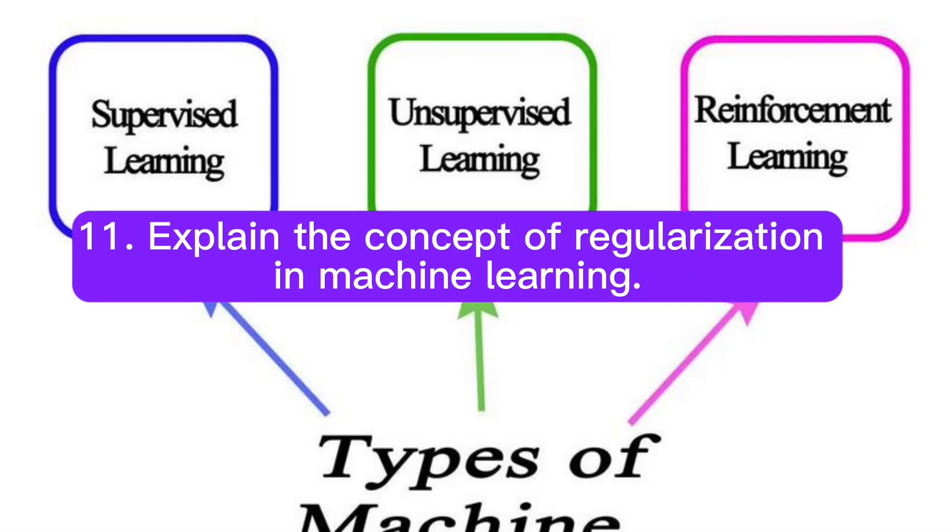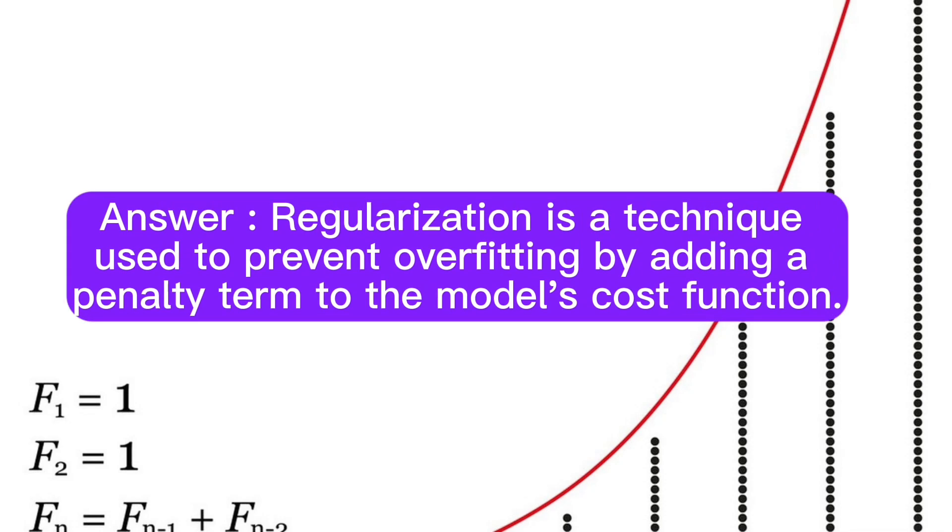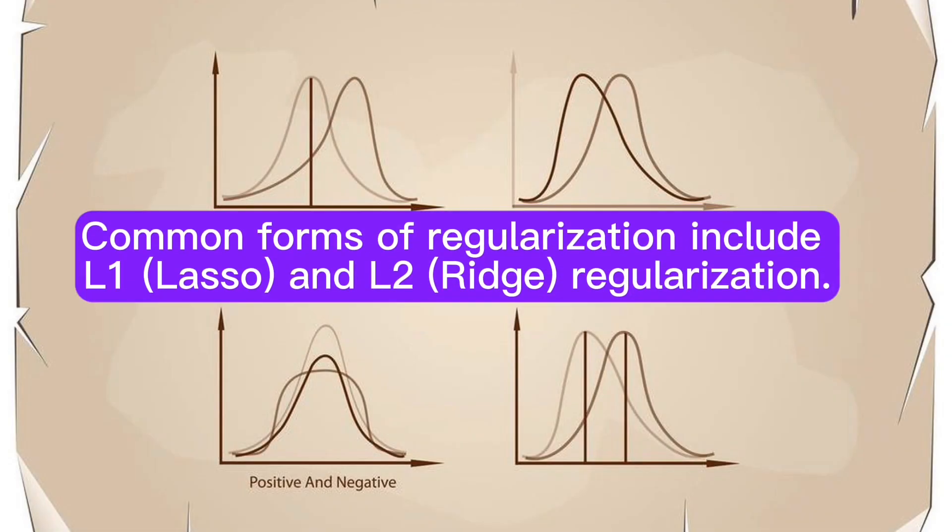Question 11: Explain the concept of regularization in machine learning. Answer: Regularization is a technique used to prevent overfitting by adding a penalty term to the model's cost function. Common forms of regularization include L1 (lasso) and L2 (ridge) regularization.